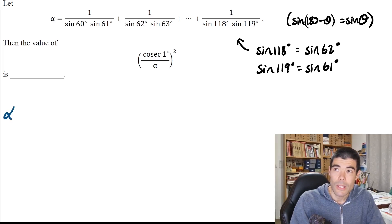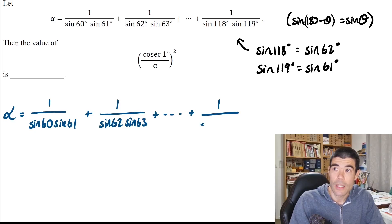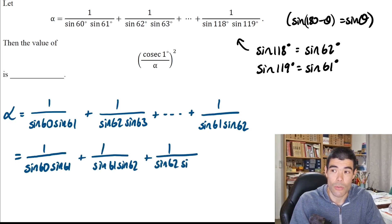So that last term becomes 1 over sine 61 sine 62. It fits better as the second term of the sequence, between sine 60 sine 61 and sine 62 sine 63.